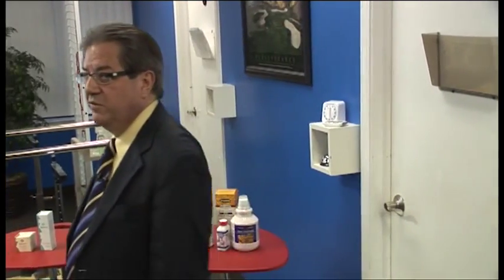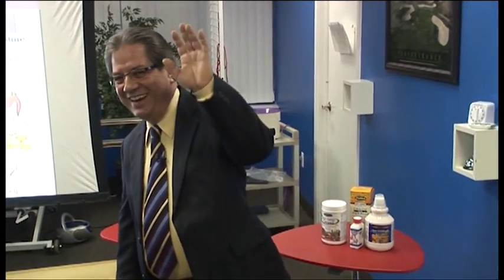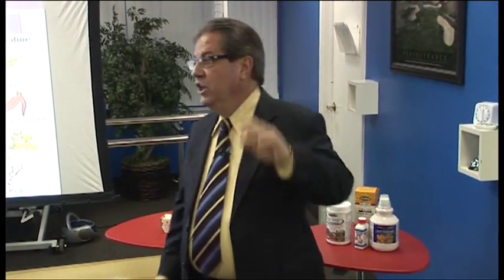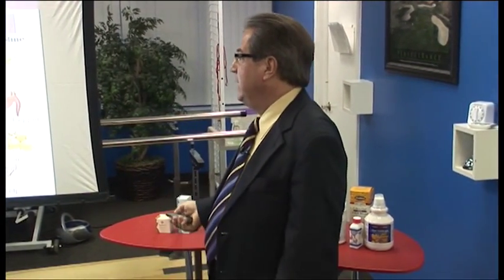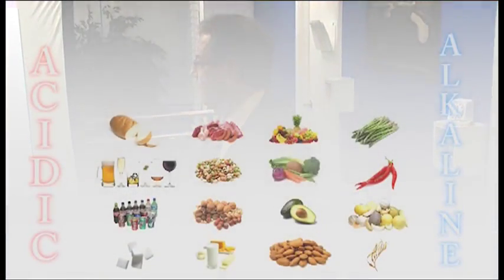The best way to balance your pH is through diet, but to do that you'd have to eat 80% fruits and vegetables. How many people here eat 80% fruits and vegetables? There are a couple of vegetarians here. You'd have to eat 80% fruits and vegetables and 20% of everything else.